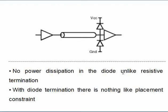With diodes dissipating very little power unlike resistive termination, we don't have the power dissipation problem. Another advantage is placement flexibility — series termination goes on the source side and parallel/AC termination on the receiver side, but since these diodes don't have impedance, they can be placed anywhere along the line, even at a specific discontinuity point where reflections are occurring.